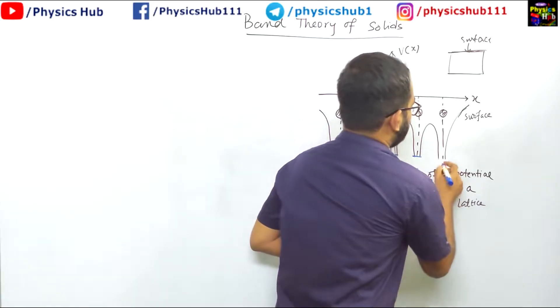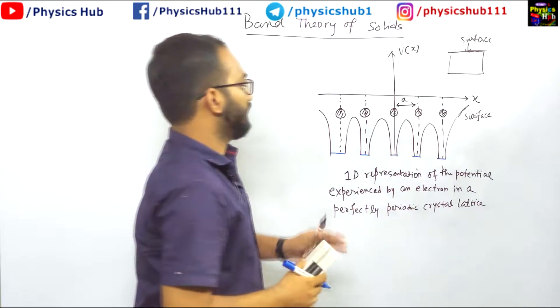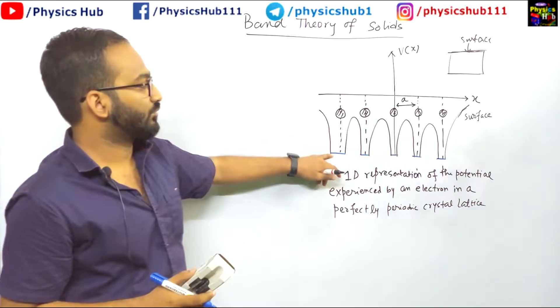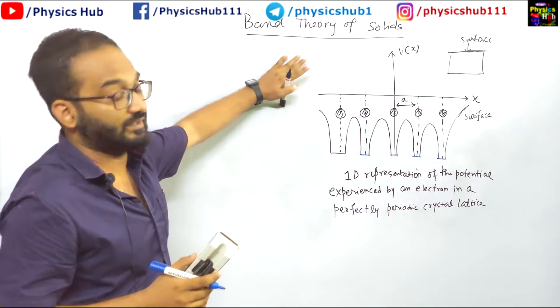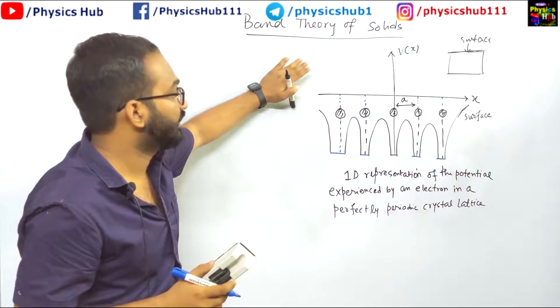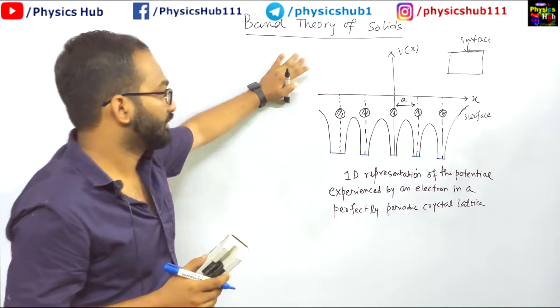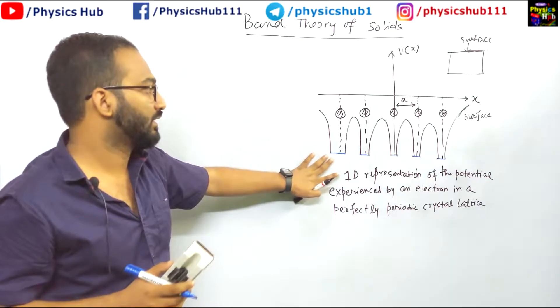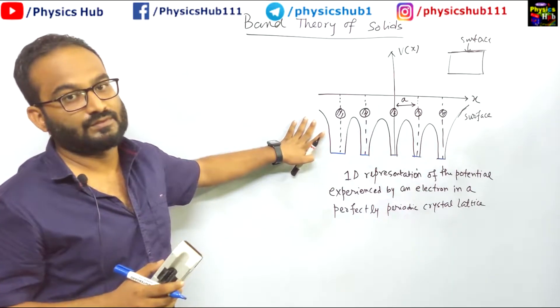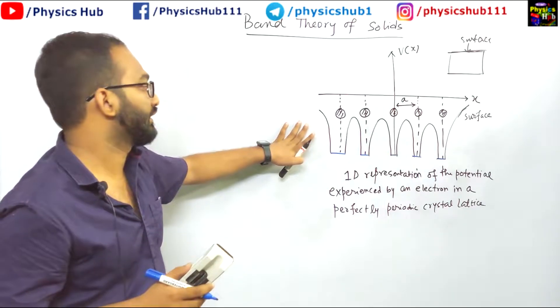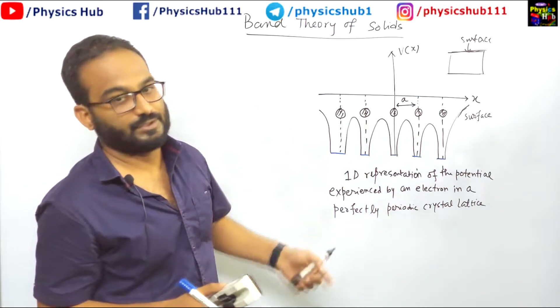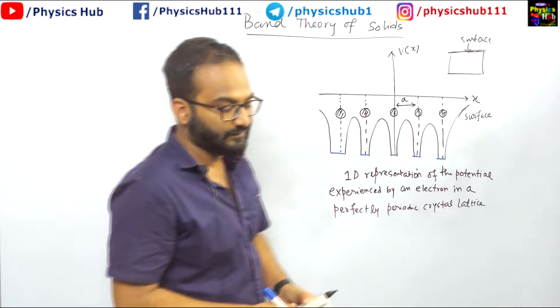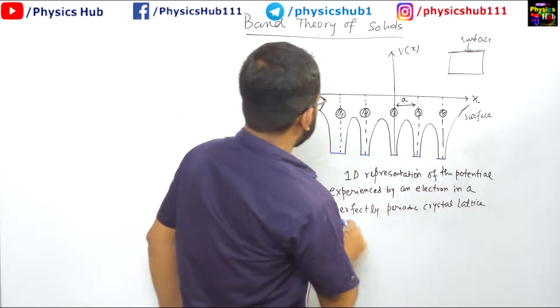Why we need to approximate this? Because handling this type of potential is not an easy task. That is why we need some approximation. So this is one approximation we have done. But you see still this is complicated, so we need further modification. And that further modification can be done in this way.